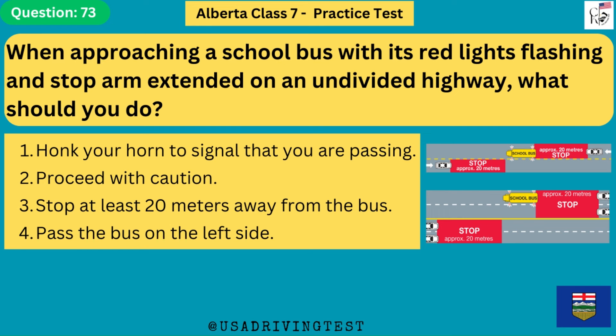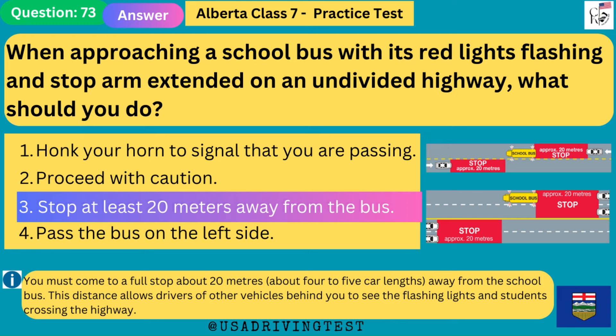When approaching a school bus with its red lights flashing and stop arm extended on an undivided highway, what should you do? 1. Honk your horn to signal that you are passing. 2. Proceed with caution. 3. Stop at least 20 meters away from the bus. 4. Pass the bus on the left side. The answer is 3: stop at least 20 meters away from the bus. You must come to a full stop about 20 meters (4 to 5 car lengths) away from the school bus. This distance allows drivers behind you to see the flashing lights and students crossing the highway.